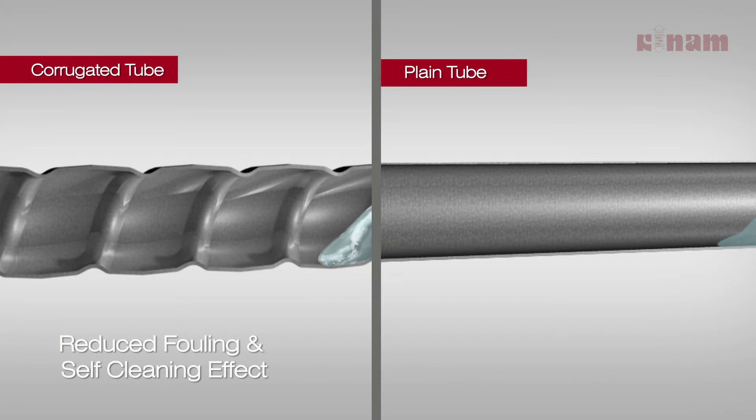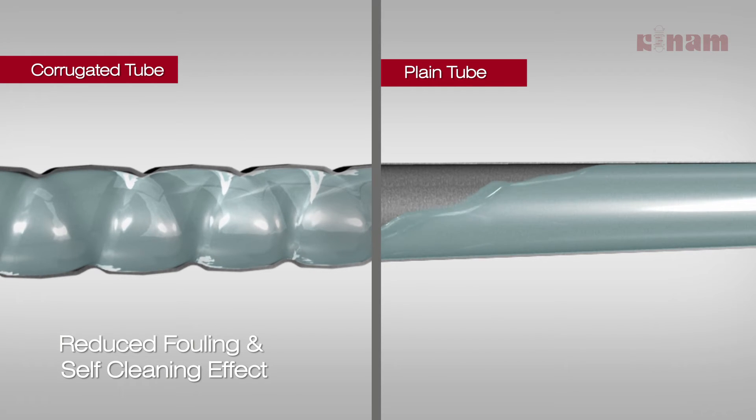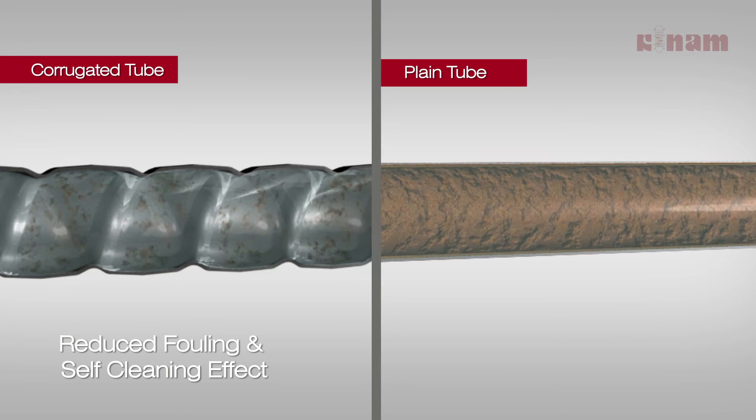Higher peripheral turbulence due to corrugations does not allow the suspended solids in the fluid to settle on the tubes, thus giving it a self-cleaning effect, which results in reduced fouling. This ensures longer running time without stopping for cleaning.